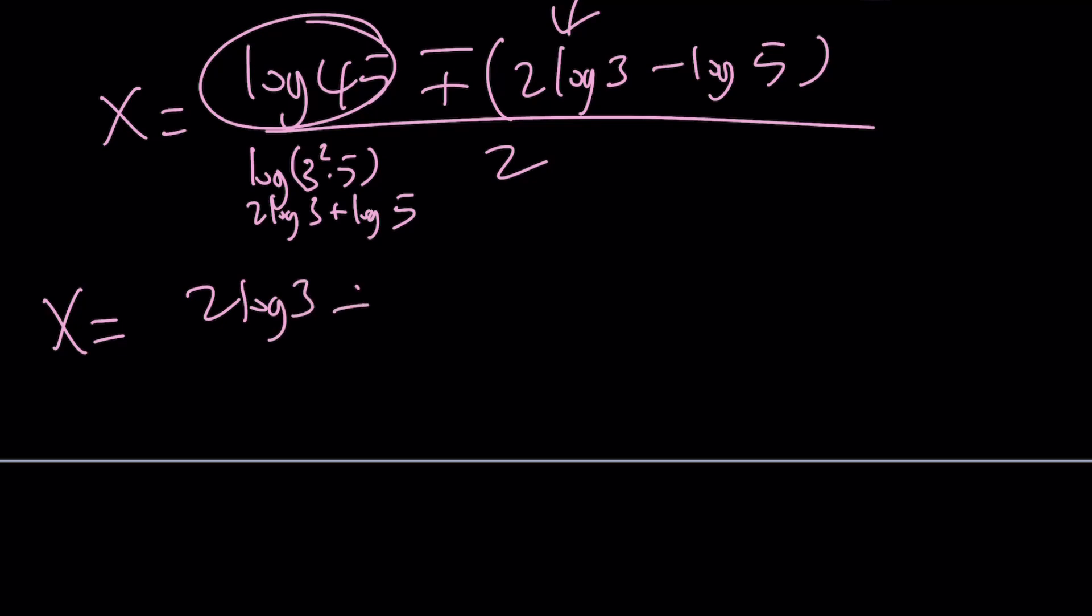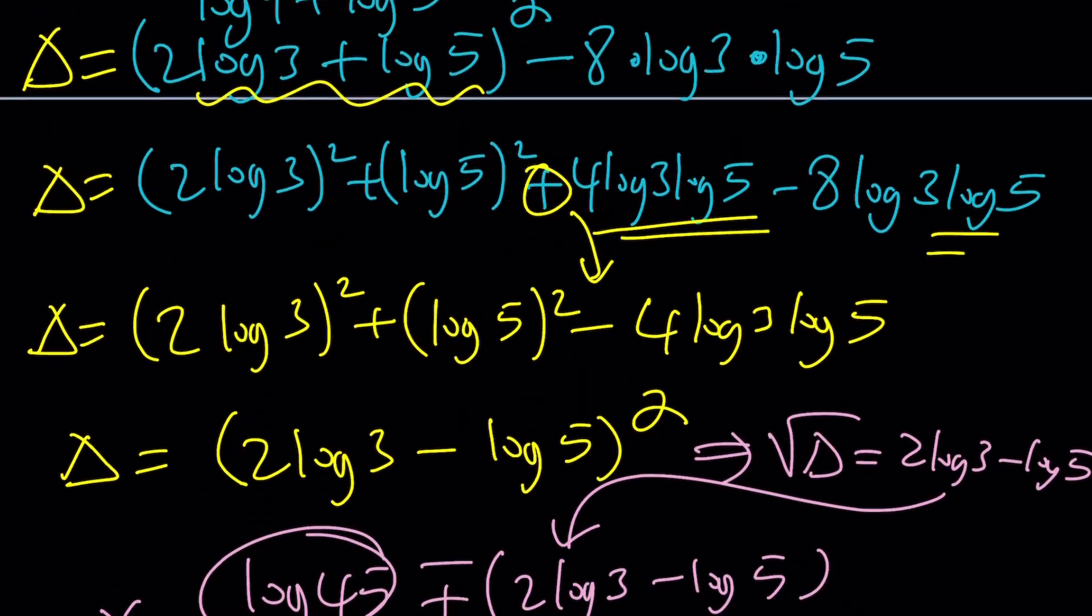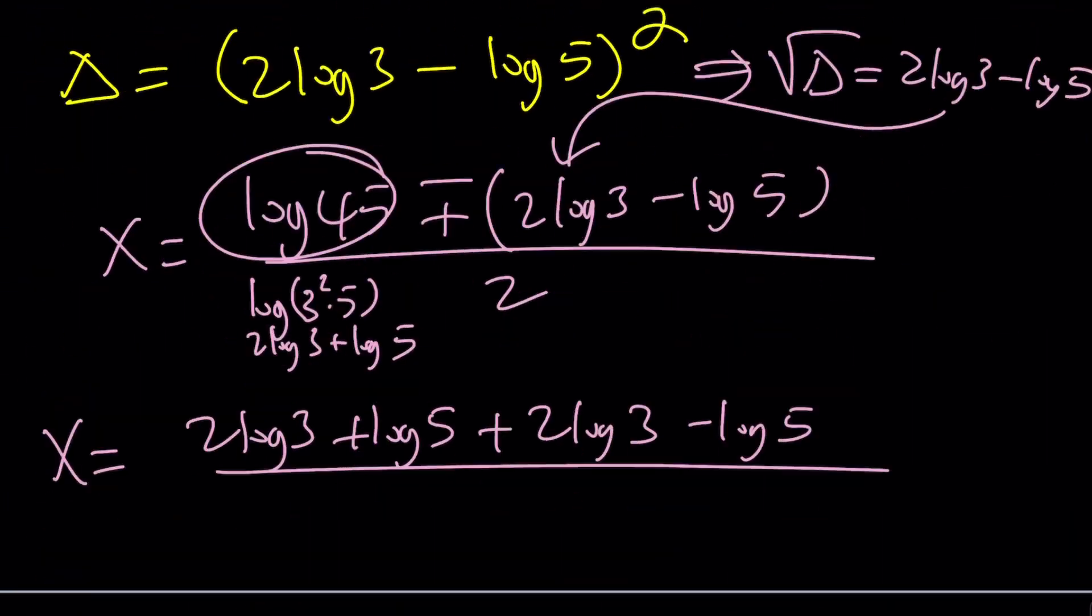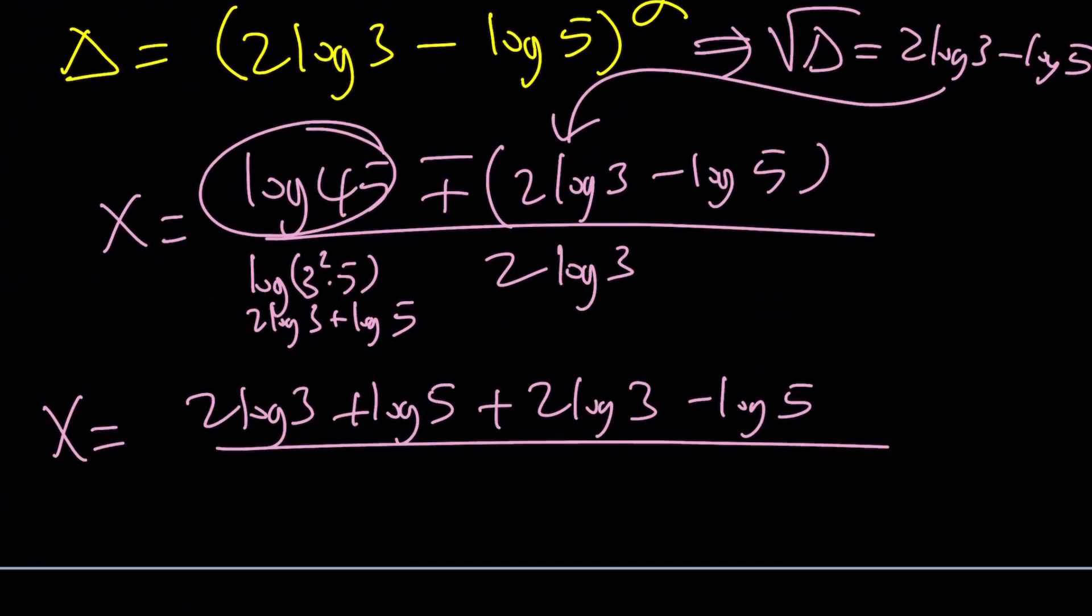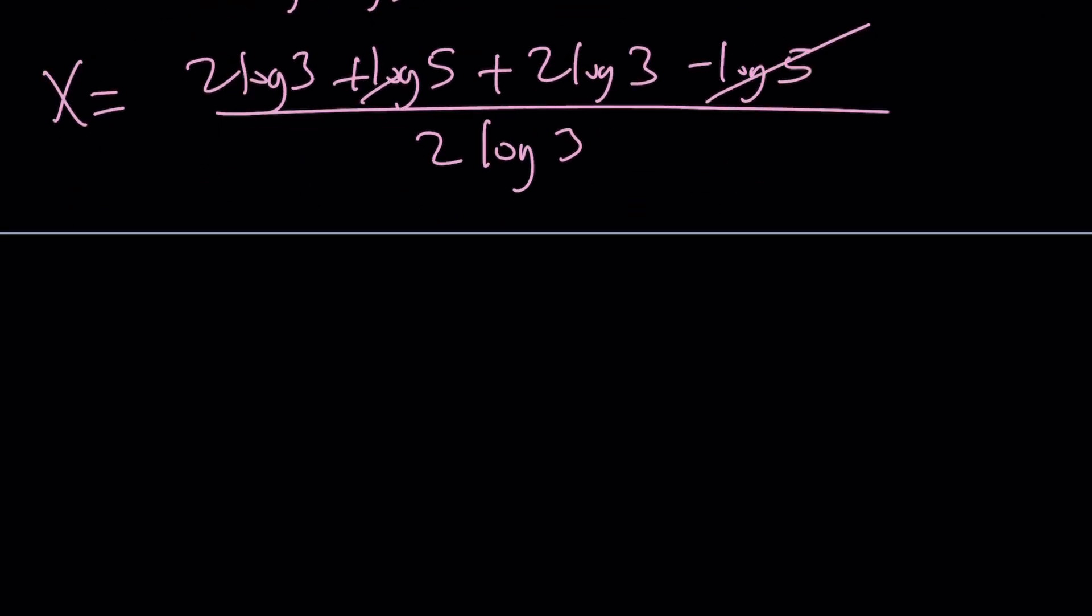So it's going to look like this: 2 log 3 plus log 5 plus 2 log 3 minus log 5, so I'm taking the positive sign first, divided by 2, I think there was another term at the bottom, 2 times log 3. Yes, I was just missing that term. 2 log 3. And if you simplify this, log 5 is going to cancel out. x equals 4 log 3 divided by 2 log 3. The log 3s are going to cancel out. So in other words, it's going to be like 4 divided by 2, which is 2. Awesome.